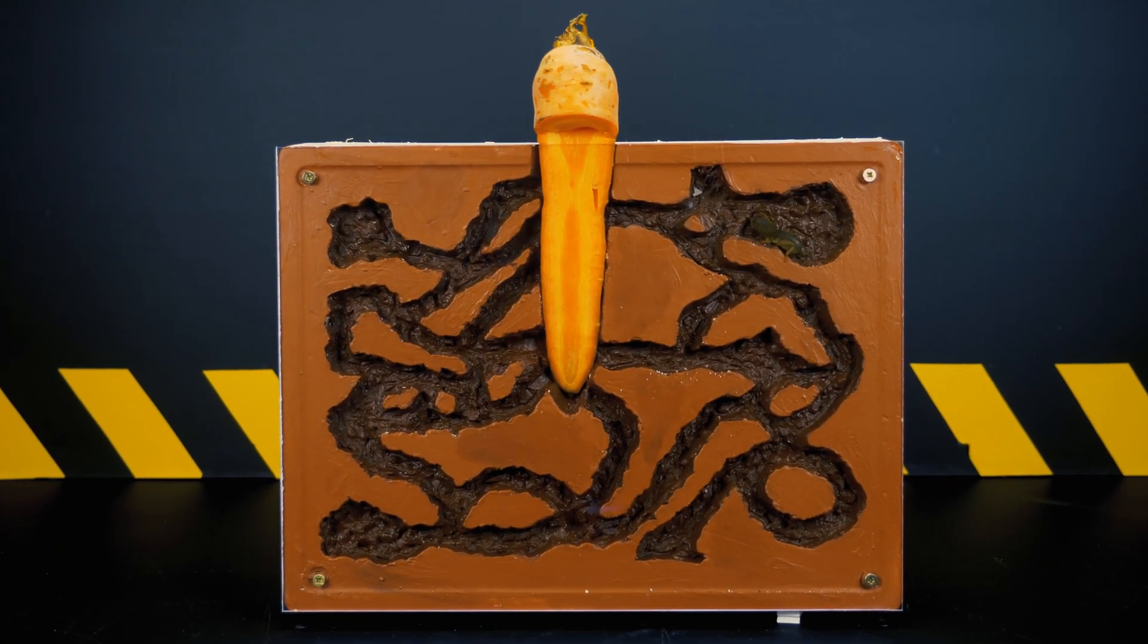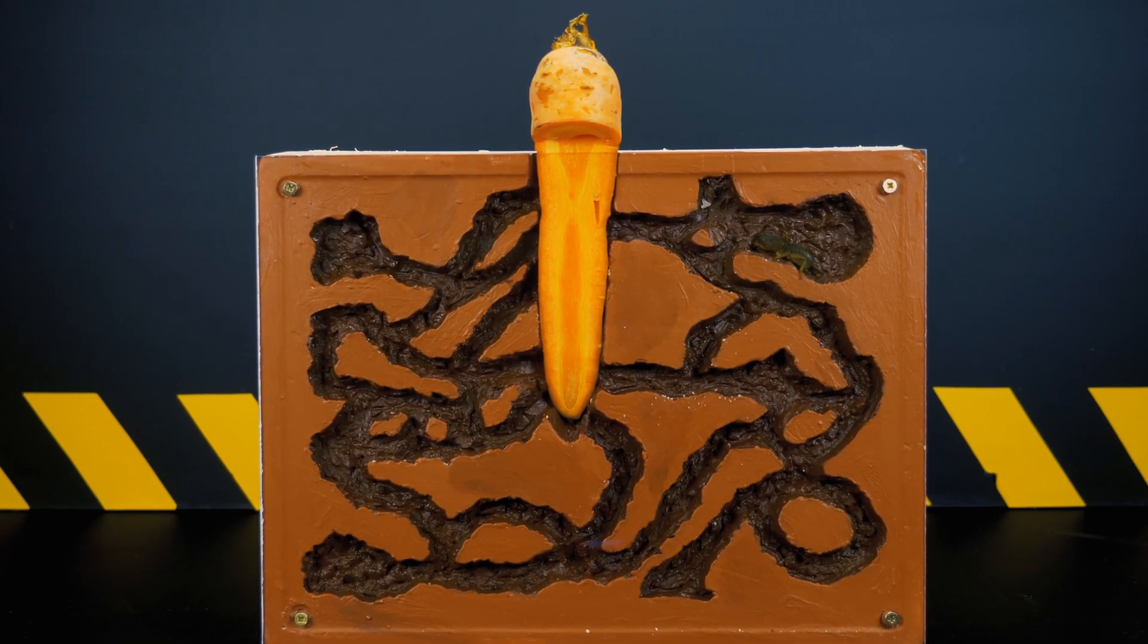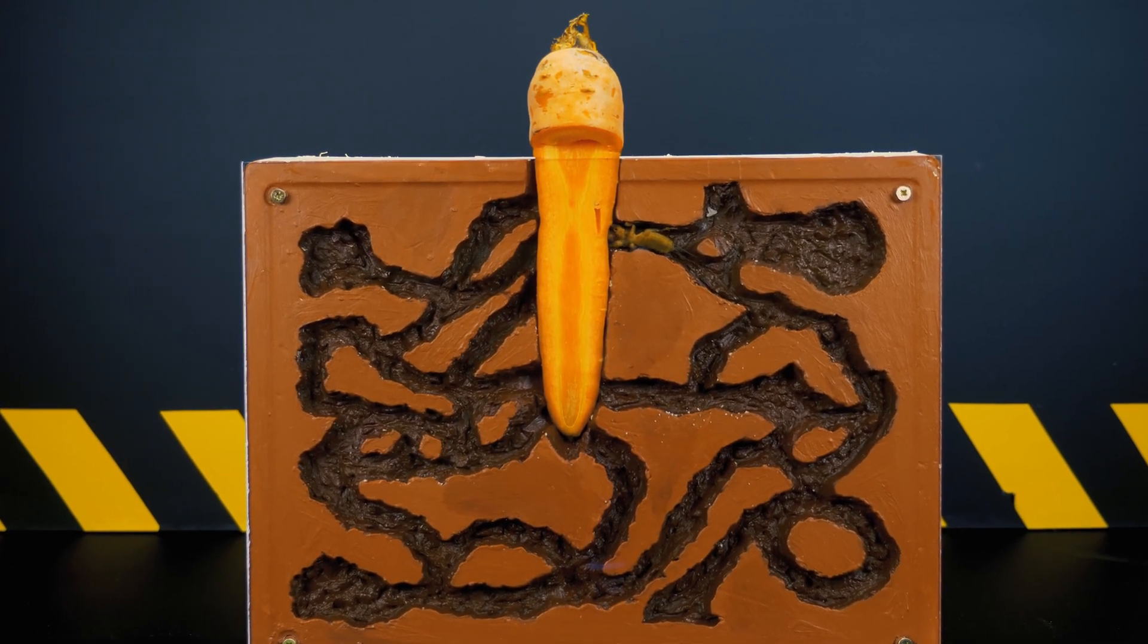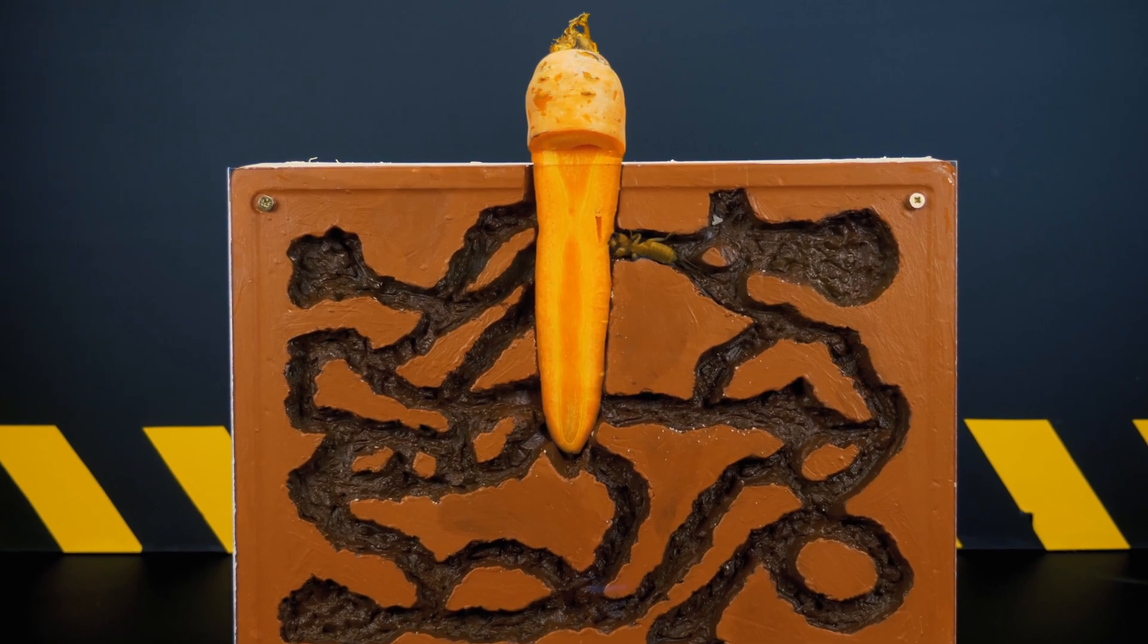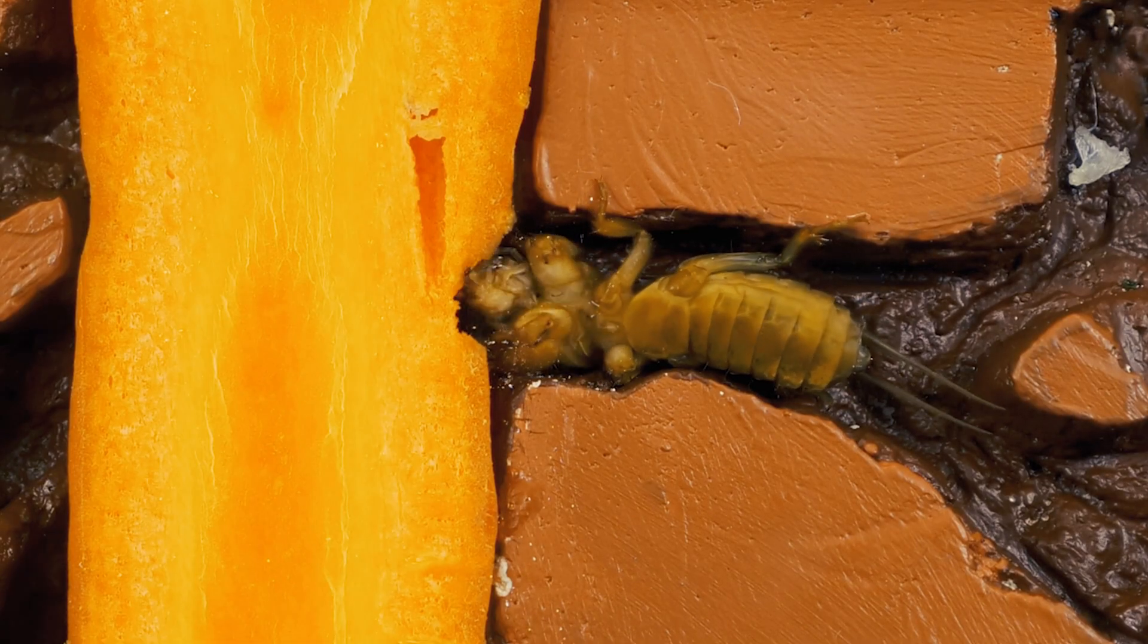There are four dowels at the corners with the help of which I fixed a sheet of plexiglass, and we got a full-fledged terrarium for a mole cricket resembling a cut of soil with tunnels and carrot.